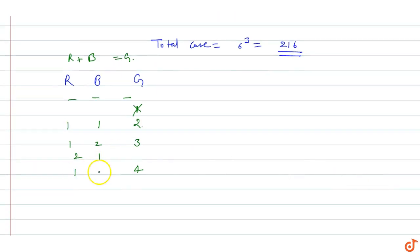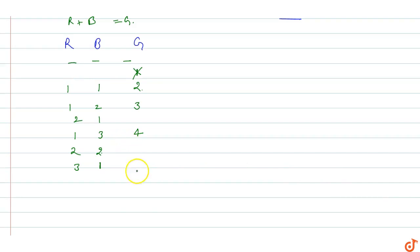For green = 5, there are four possibilities: (1,4), (2,3), (3,2), and (4,1).